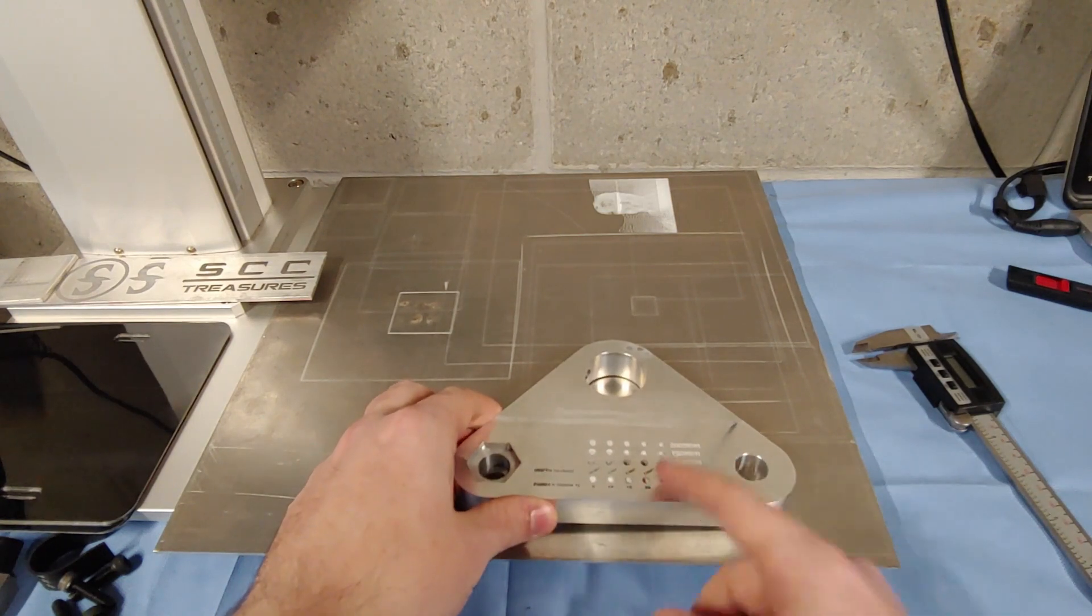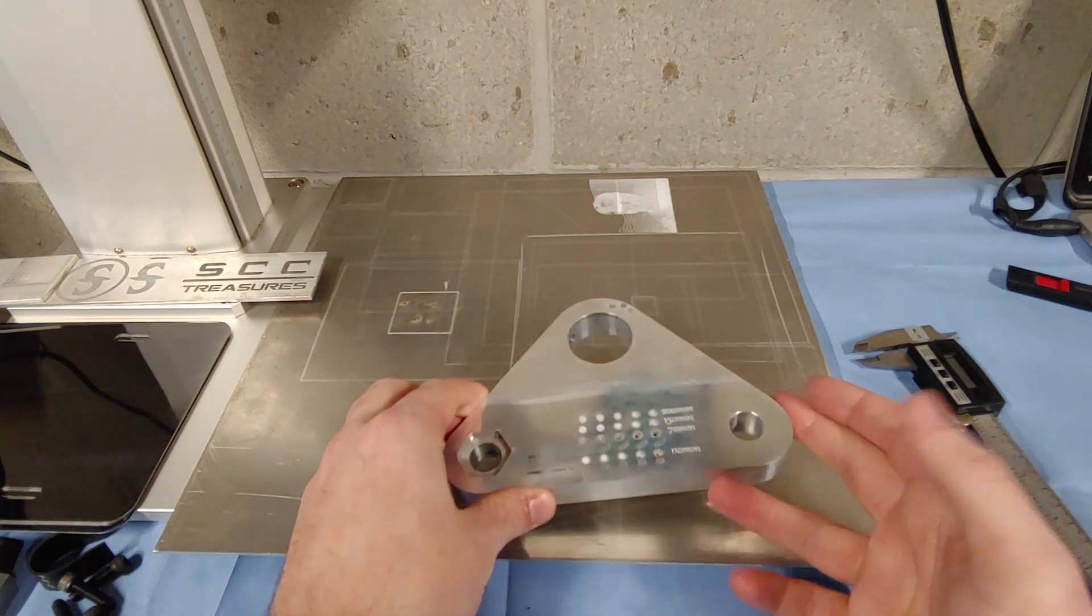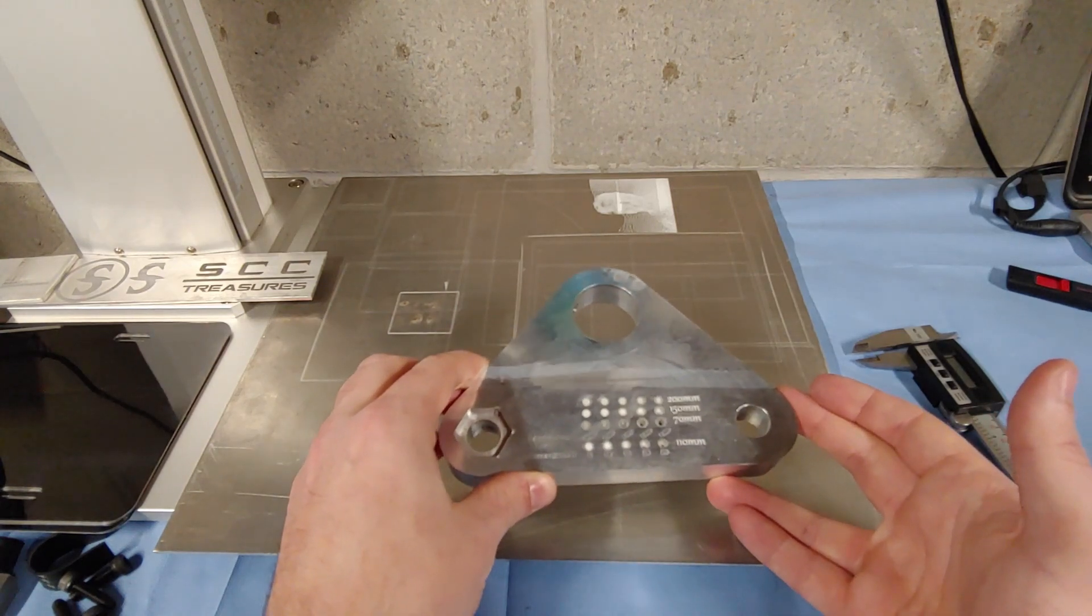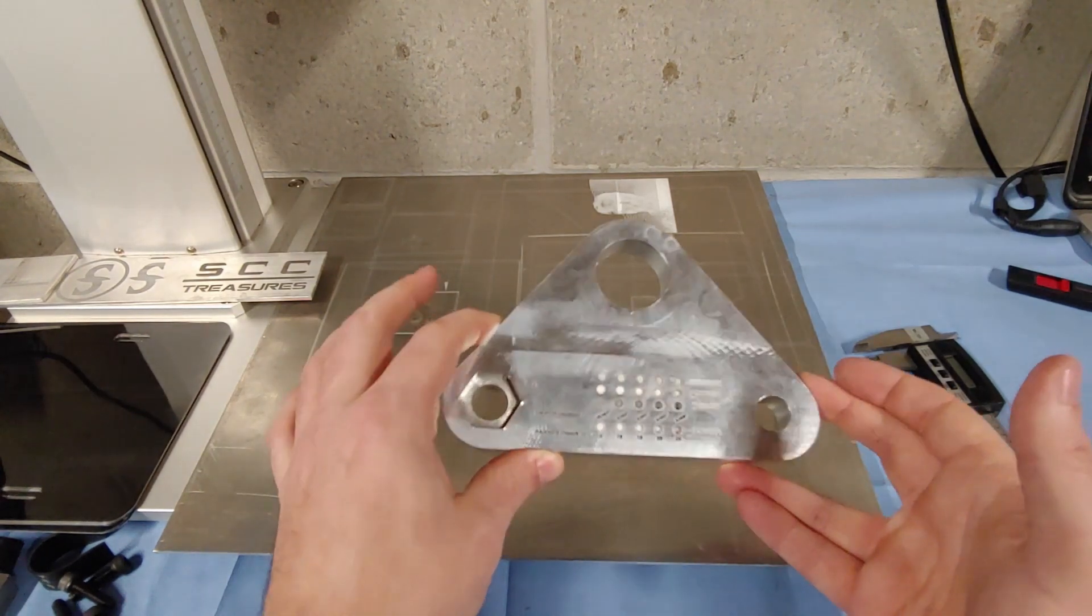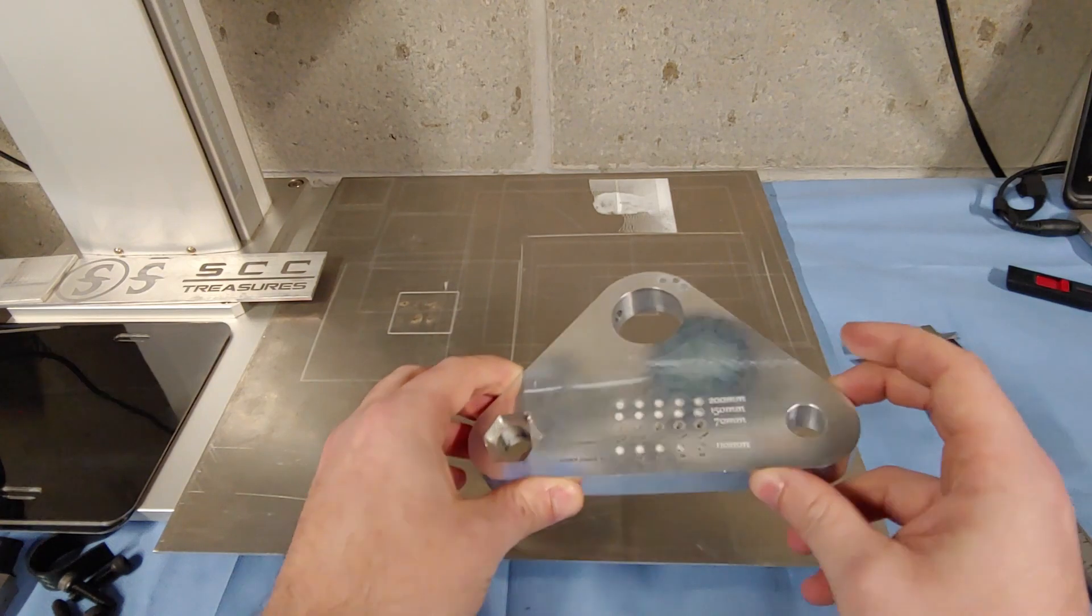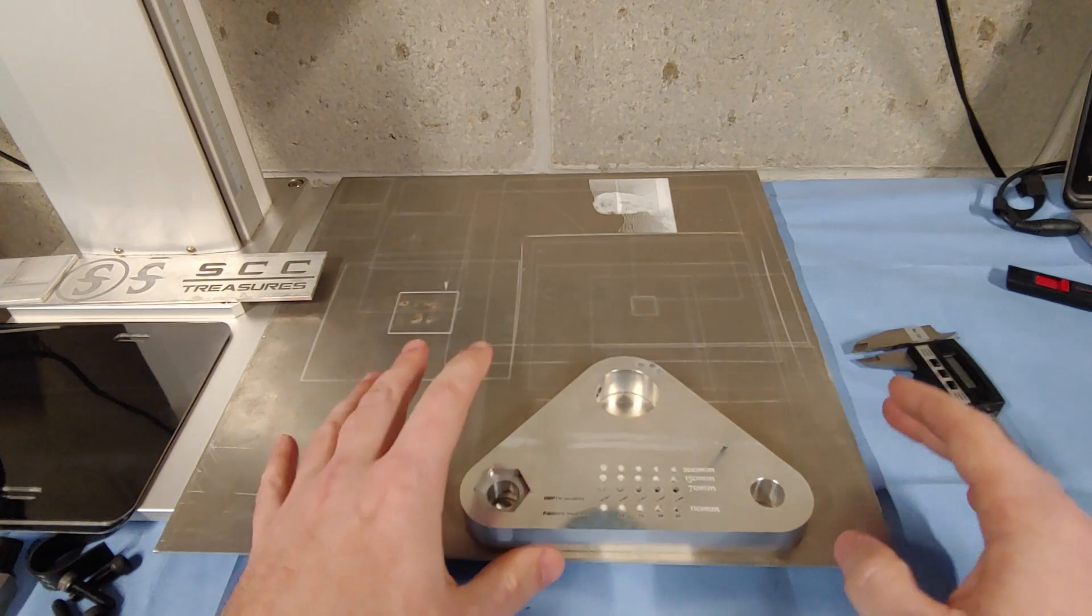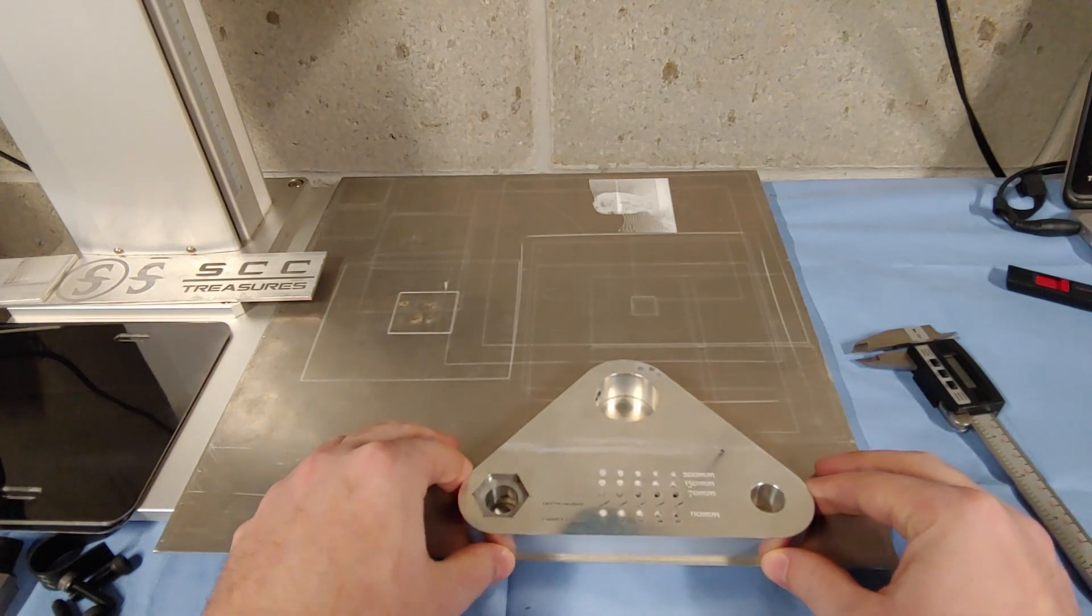However, if your goal is to punch right through eighth inch aluminum or get really decent depth in an okay amount of time in steel, then the 50 watt is definitely where you want to go, and the smaller lens that you can possibly use, the better.